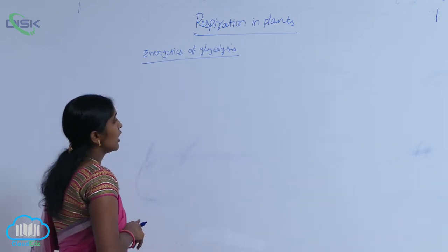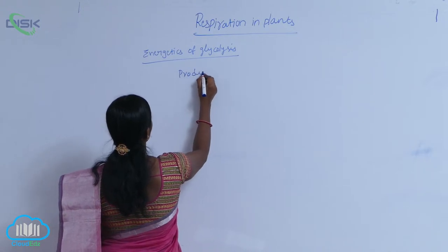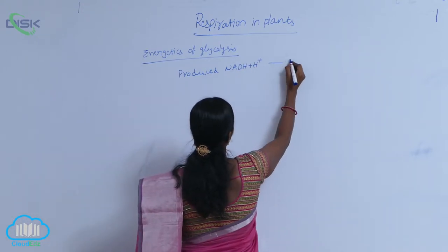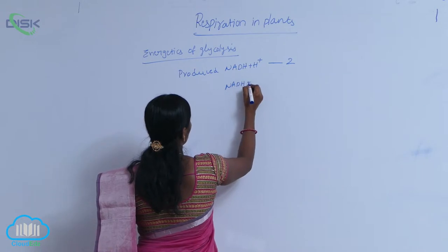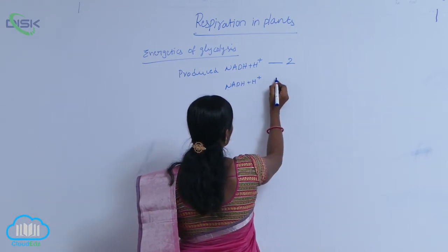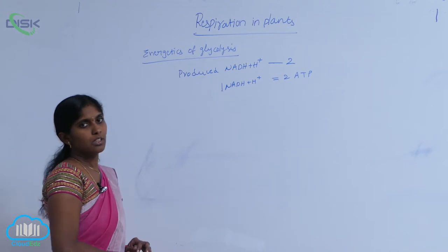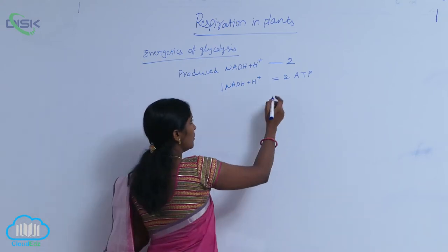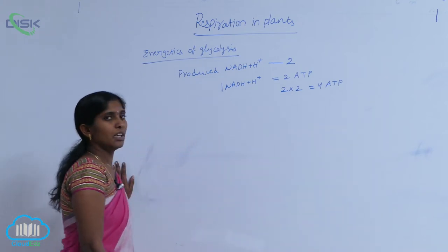During glycolysis, how many NADH₂ are produced? Two NADH₂ are produced. One NADH₂ is involved in the electron transportation and oxidative phosphorylation, which yields two ATPs. So two NADH₂ give two into two — four ATPs are released from NADH₂.